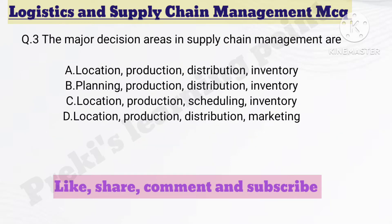Question number 3. The major decision areas in supply chain management are — Option A: Location, production, distribution, inventory. Option B: Planning, production, distribution, inventory.